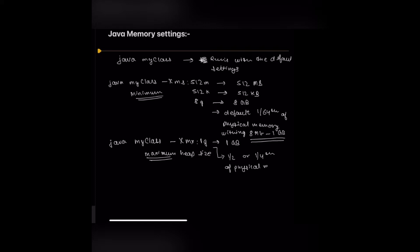If the physical memory is less than 192 MB, the default value of maximum heap size will be one-fourth of the physical memory. If it is greater than 192 MB, the default value for maximum heap size will be one-half the physical memory. So 192 MB is the threshold — less than that gives one-fourth, greater than that gives half. We can configure it in MB, KB, or whatever unit we want.